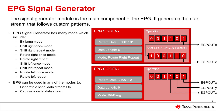The EPG signal generator or siggen is the main component used for creating custom data patterns. The siggen modules have many modes of operation that make them flexible to address different application needs. The modes of operation include bit bang mode, shift right mode, rotate right mode, shift left mode, and rotate left mode. The shift and rotate modes have an additional option to manipulate the data once, for example on a specific software trigger, or manipulate the data continuously.